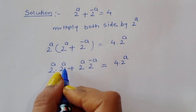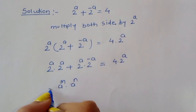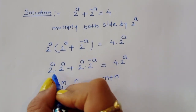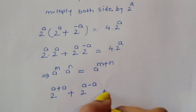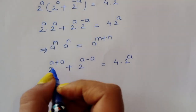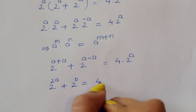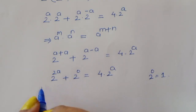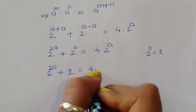Now, 2^a times 2^a becomes 2^(a+a) because we know the formula a^m times a^n = a^(m+n). Using this formula, we get 2^(a+a) + 2^(a-a) = 4 times 2^a, which gives 2^(2a) + 2^0 = 4 times 2^a. Since 2^0 = 1, we have 2^(2a) + 1 = 4 times 2^a.